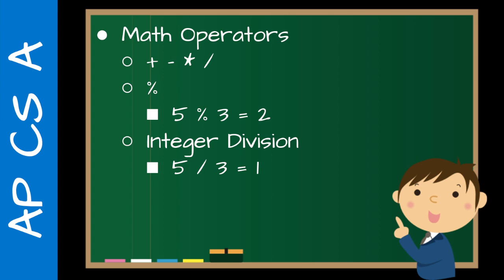Be sure to point out integer division — there are definitely AP-type multiple choice questions where this is a factor. So 5 divided by 3 equals 1 in Java. I ask students what 5 divided by 3 is, they say 1.666666, and then I say let's try it — we put it into Java, run it, and we get 1.